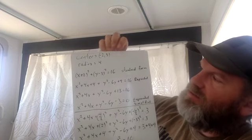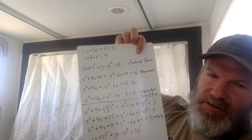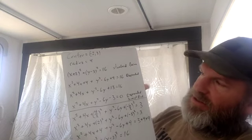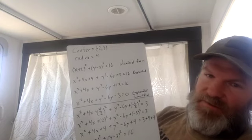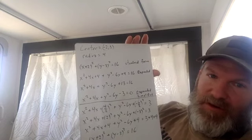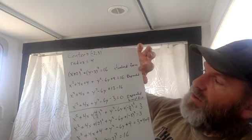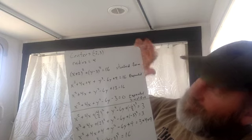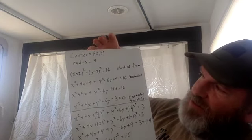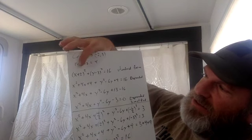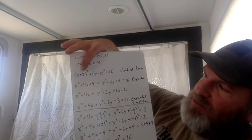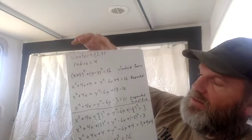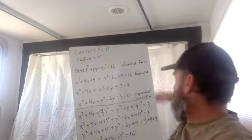That's what we spent a lot of time on last week — that's called the standard form of the circle. Now I'm going to show you another form called the expanded form. The expanded form is actually taking this x plus two and squaring it, and taking this y minus three and squaring it.